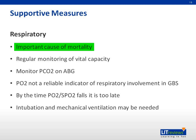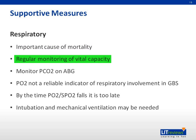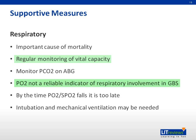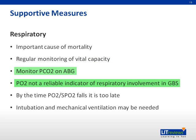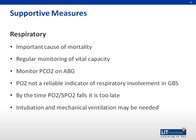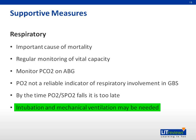Respiratory weakness is an important cause of mortality in GBS. Vital capacity should be screened and monitored for respiratory involvement. PO2 is not a reliable indicator for respiratory involvement, and PCO2 should be monitored on arterial blood gases. Patients with impending respiratory failure, as suggested by clinical symptoms and signs, drop in vital capacity, or rise in PCO2, should be intubated and mechanically ventilated.